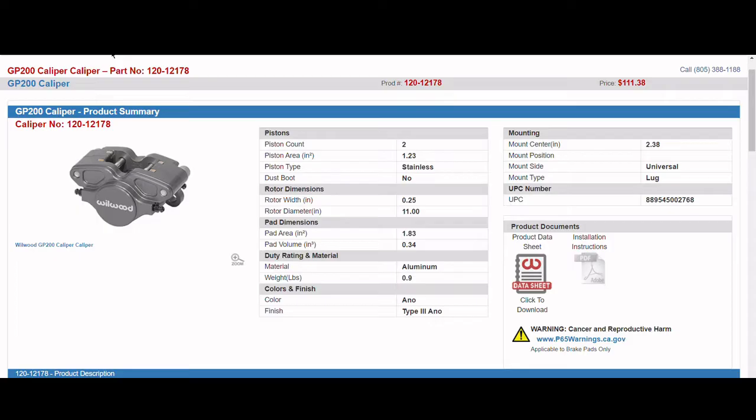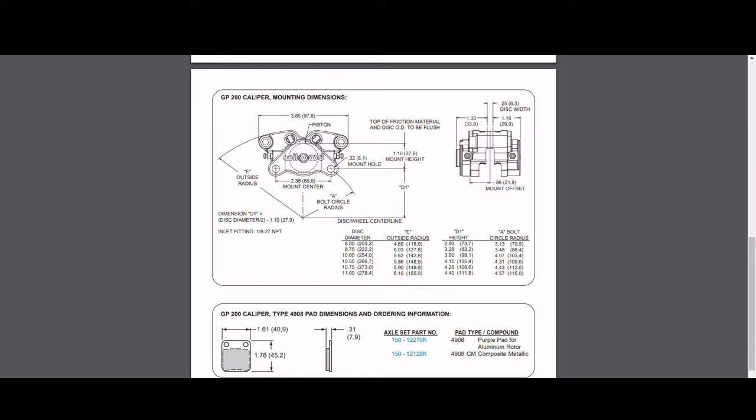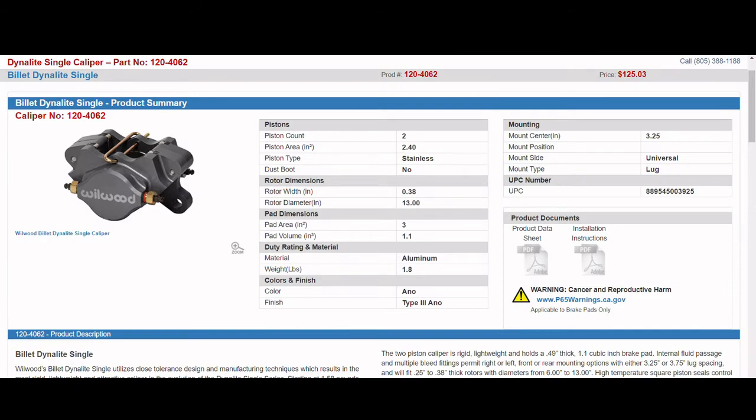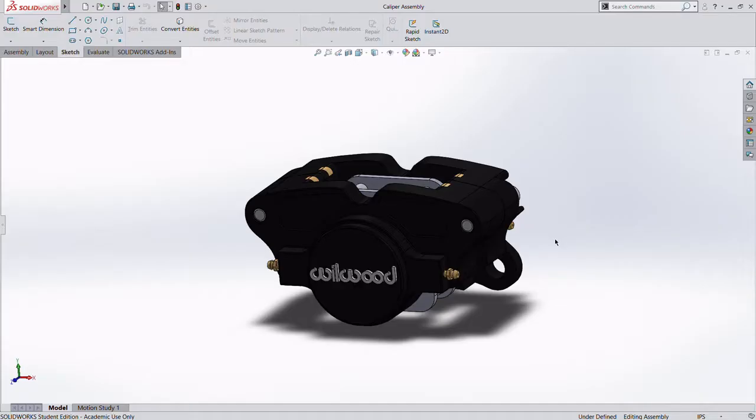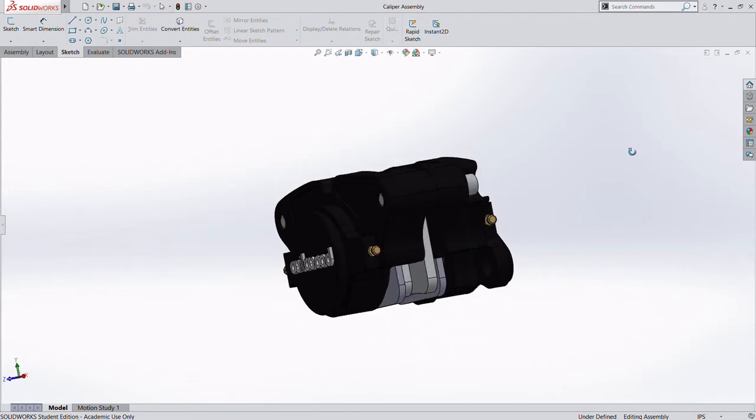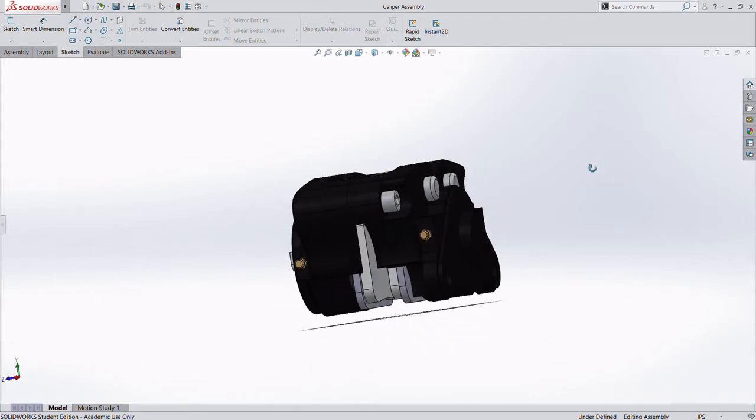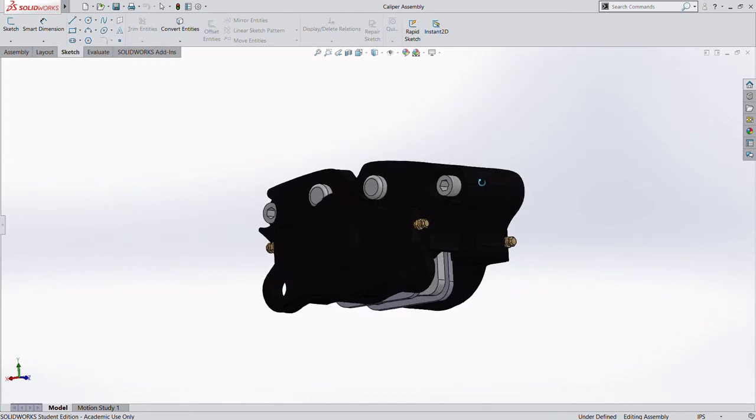Wilwood calipers ended up being our main consideration due to their low cost, high availability, and small minimum rotor diameter. Our two main considerations in the Wilwood catalog were the billet and the GP200s. Of the two, the billet was by far the best candidate. It had the lowest minimum rotor diameter, was fairly priced, and had more pad options. However, the GP200s were free. VMS had purchased these calipers before the capstone was even formed. Although they had lower pad options, the minimum rotor size was sufficient for our packaging, and the cost was unmatched.